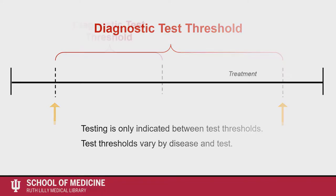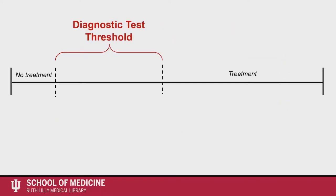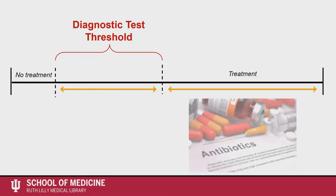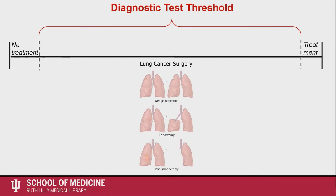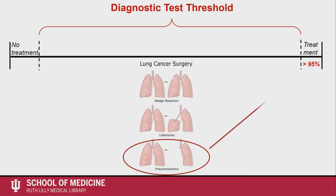If the benefit of treatment is high and risk is low, the test threshold might be small and the treatment threshold might be large, such as giving a safe antibiotic to a patient with diabetes who possibly has a life-threatening infection. If the risk of treatment is high — for example, treatment might be pneumonectomy for lung cancer — the treatment threshold is likely small and the disease probability is greater than 95%. When the risk of treatment is high, the probability of disease should be very high.